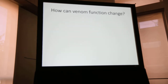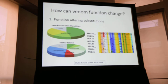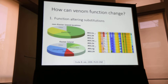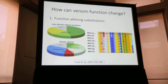Venom function may change in a couple of different ways. The first is that non-synonymous mutations may arise in conotoxin genes that result in changes in function, and there is ample support for this mechanism in the literature. For example, Duda and Li describe an Easter Island population of Conus miliaris that is exposed to a novel prey assemblage relative to non-Easter Island populations, and there are a large number of substitutions in several conotoxin genes that are associated with that shift to a novel prey assemblage.